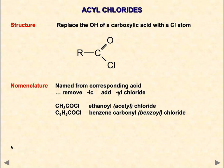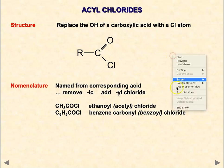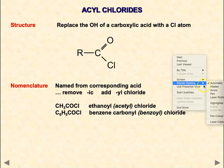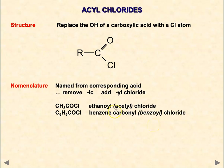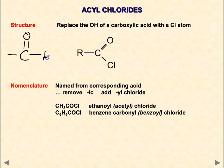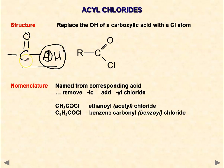Acyl chlorides are carbonyl compounds. We have already looked at some of the family of carbonyl compounds like carboxylic acids, aldehydes, and ketones. The key focus is the carbonyl group: if you put a hydrogen on it, it becomes an aldehyde; if you put an OH, it becomes a carboxylic acid. The attachment to the right of the carbonyl is what we're interested in.